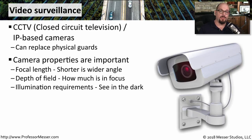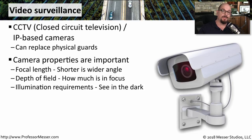You also want to get cameras with the proper specifications. For example, you may need cameras with a shorter focal length so that there is a wider angle that can be viewed from a single camera. Depth of field is also important, especially if your camera is looking at a very long distance — you want to be sure that that entire distance is in focus. And if you're going to be using these cameras in a dark location or at night, it's useful to have cameras with infrared features that are able to see even when it's dark outside.